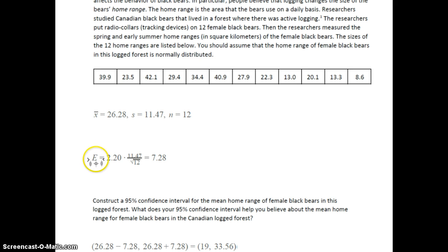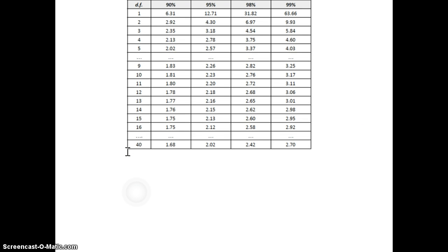How do we get the margin of error? Well, it is the t-critical value. So if we're looking at a 95% confidence interval here, let's go back to this chart. We have a sample size of 12. So that means the degrees of freedom is 11. And if we want a 95% confidence interval, the t-critical value is 2.20.